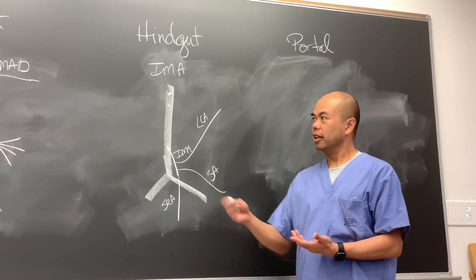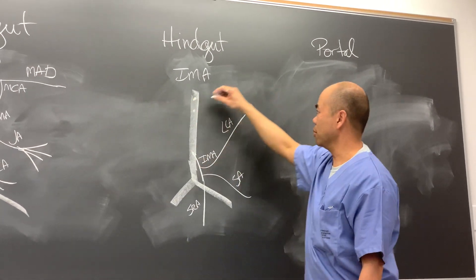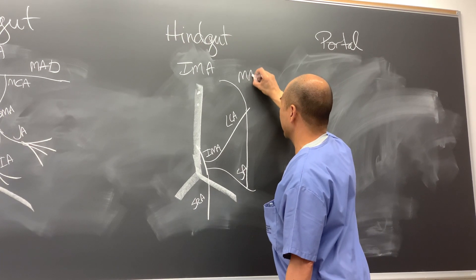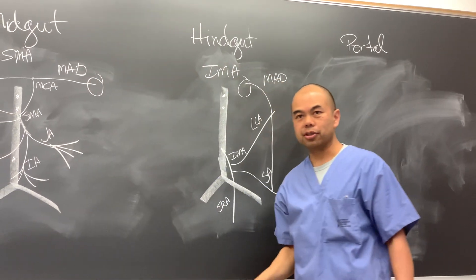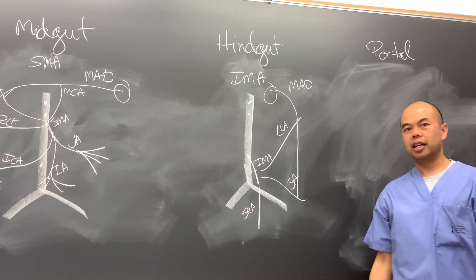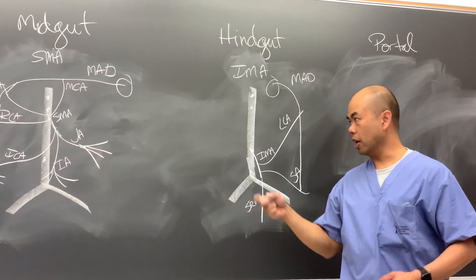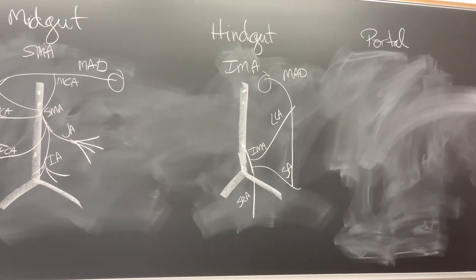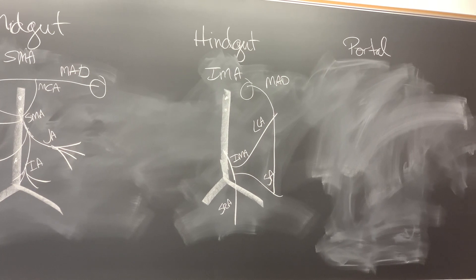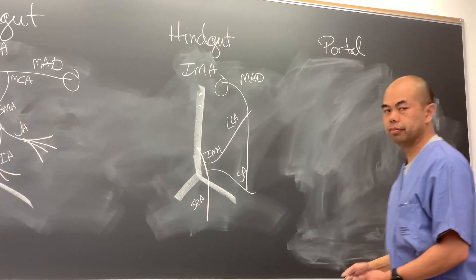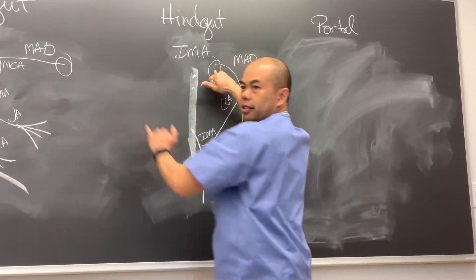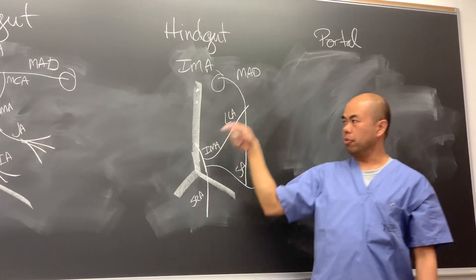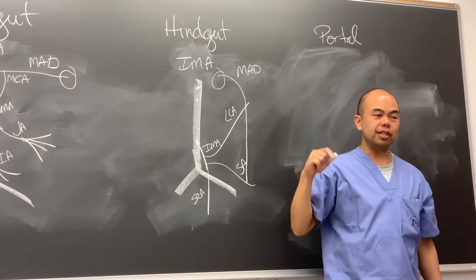The marginal artery of Drummond actually continues and connects the left colic artery and the sigmoid. The region at the left colic flexure is a watershed area - it doesn't have a direct blood supply, only arterial supply from the SMA and the IMA. That means it's super susceptible to ischemia.